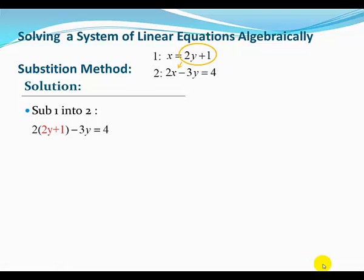Subbing this in and doing a little bit of algebra, 2 times 2y is 4y, and 2 times 1 is 2. Gathering our like terms, y is on one side and constants on the other, we get the answer y equals 2.